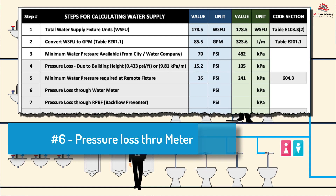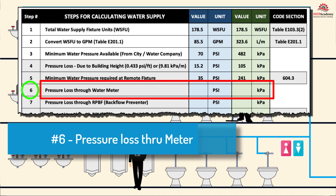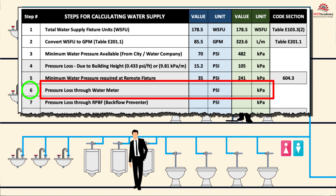Step 6: Pressure Loss Through Water Meter. The friction loss or pressure loss through the water meter can be found from the meter manufacturer. In our example, we'll use 6 PSI or 41 kPa for the pressure loss through the meter.